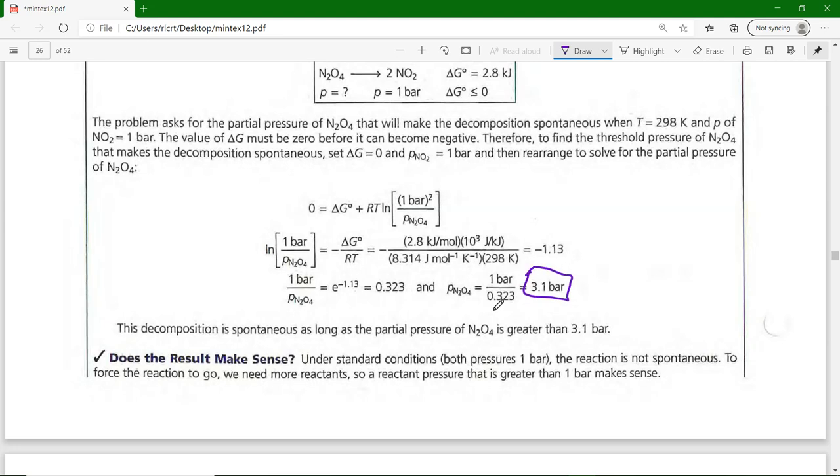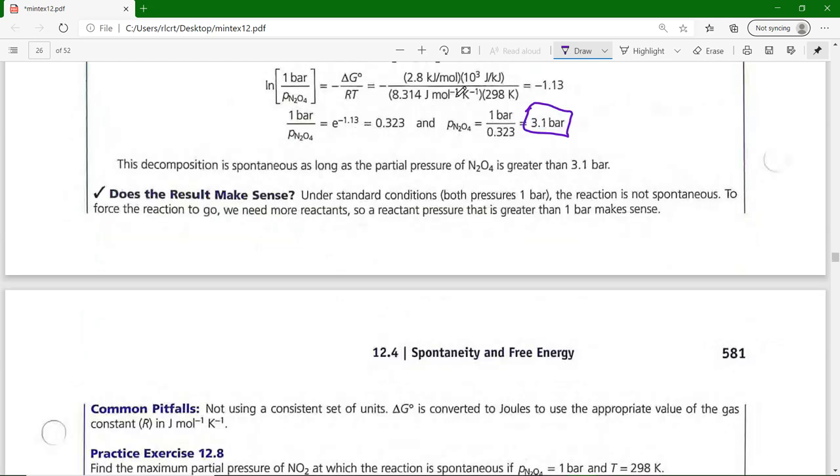As long as the partial pressure of N₂O₄ is greater than 3.1 bar, it will be a spontaneous process. I'm not changing the temperature, but if I have a partial pressure—I guess I really mean partial pressure—but if I got more stuff of the N₂O₄, then those collisions are going to drive the reaction into the spontaneous world. When ΔG is less than zero, then that works. Using standard conditions where both pressures were 1 bar, the reaction is not spontaneous. To force the reaction to go, we need more reactants, so reactant pressure greater than 1 bar makes sense.